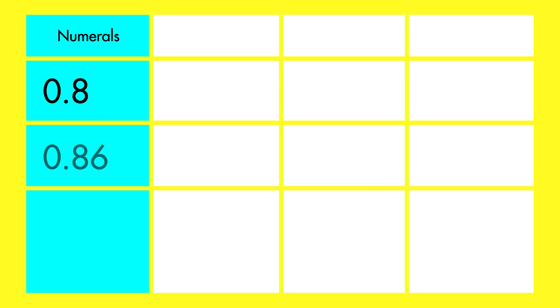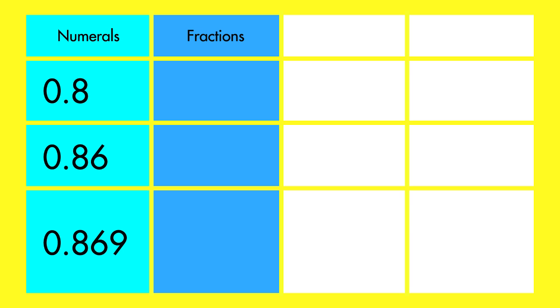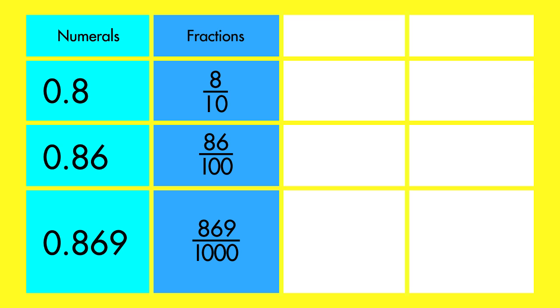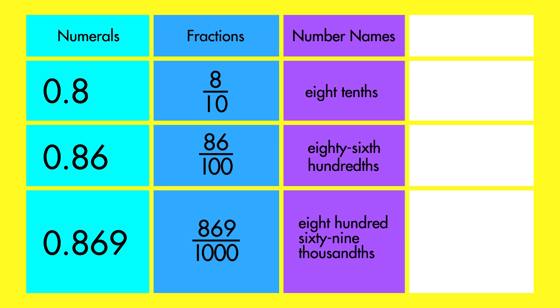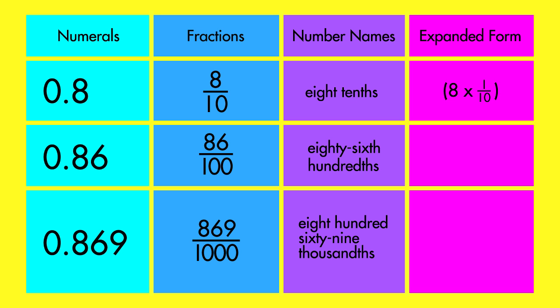Decimal numbers can be expressed in different ways. You can write them as numerals with a decimal point, or as fractions with denominators of ten, one hundred, or one thousand. You can express decimals using number names, or show them in expanded form.